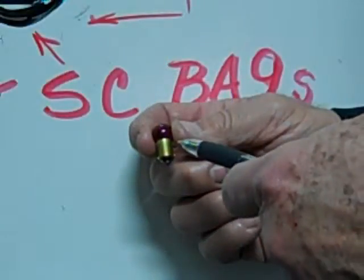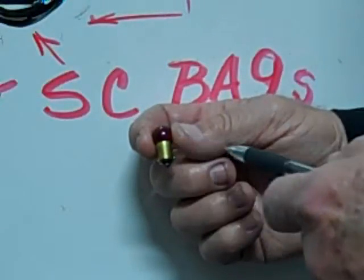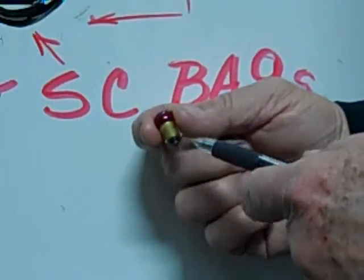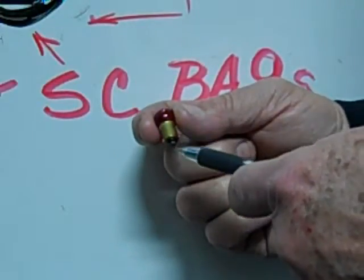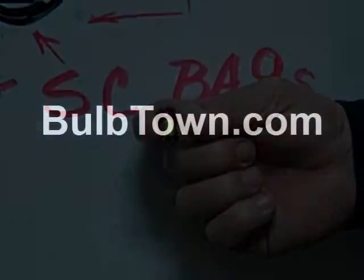This is an example of a number 456R transparent red BA9S base single contact miniature bulb.